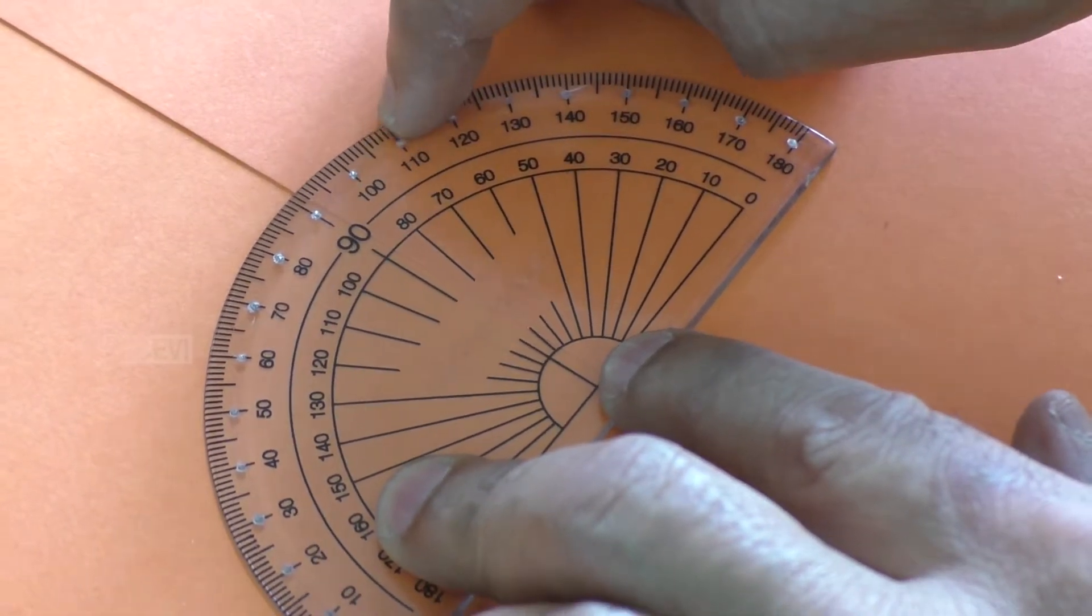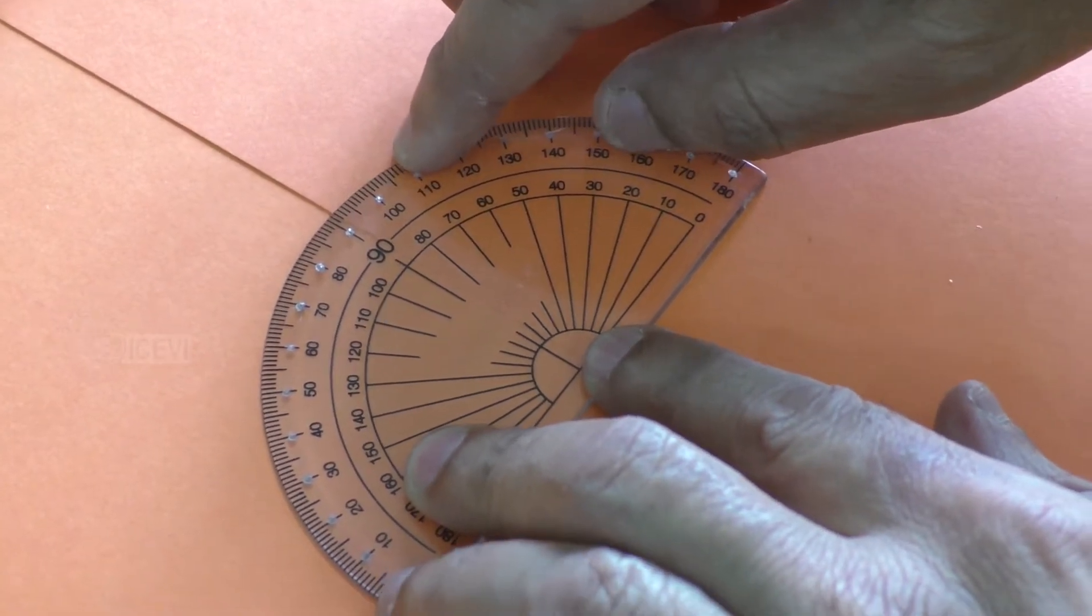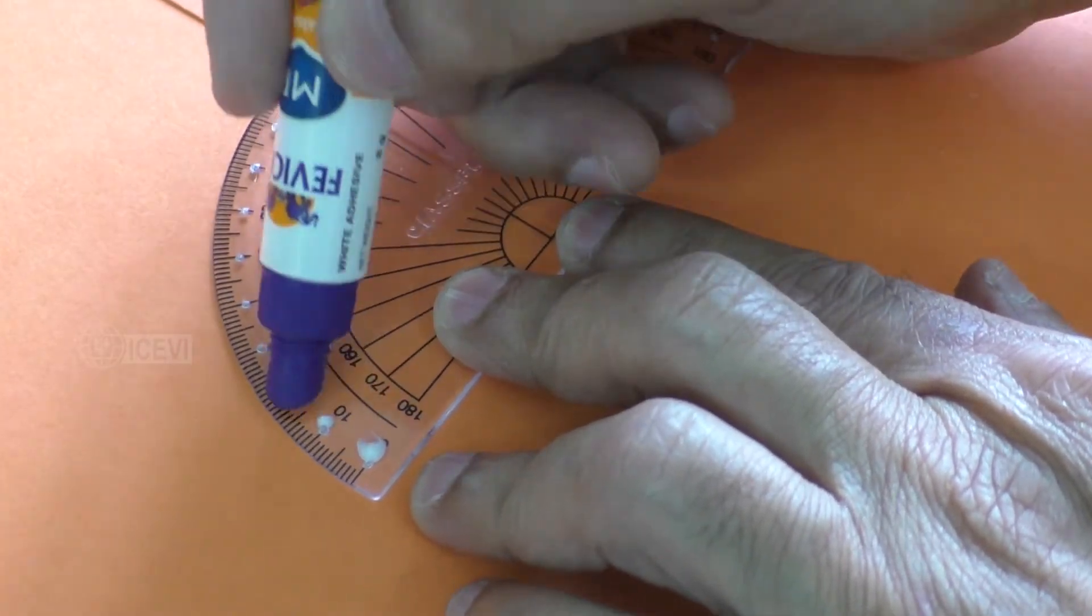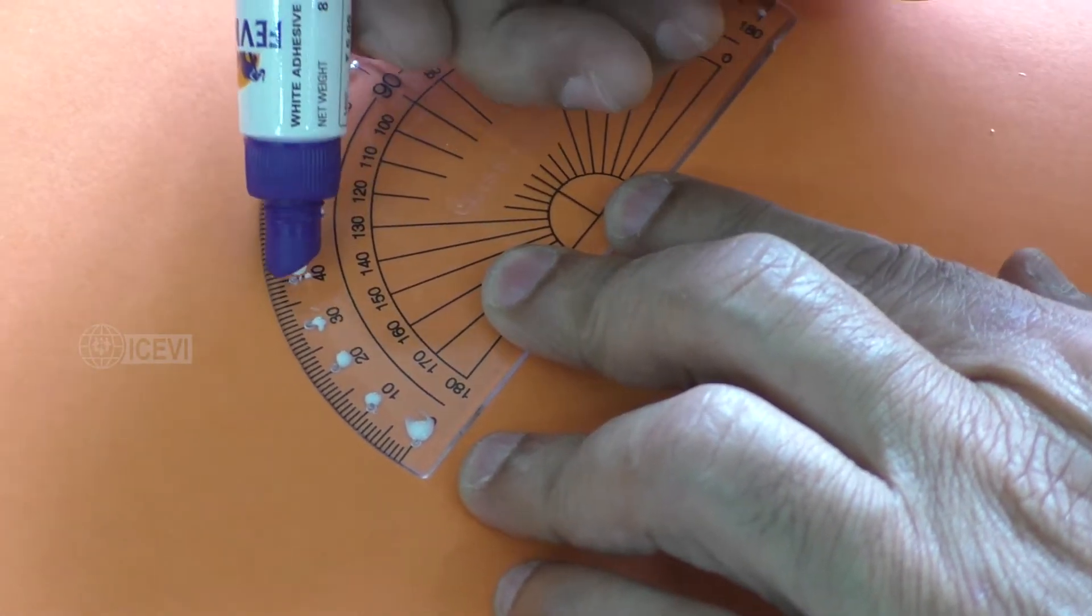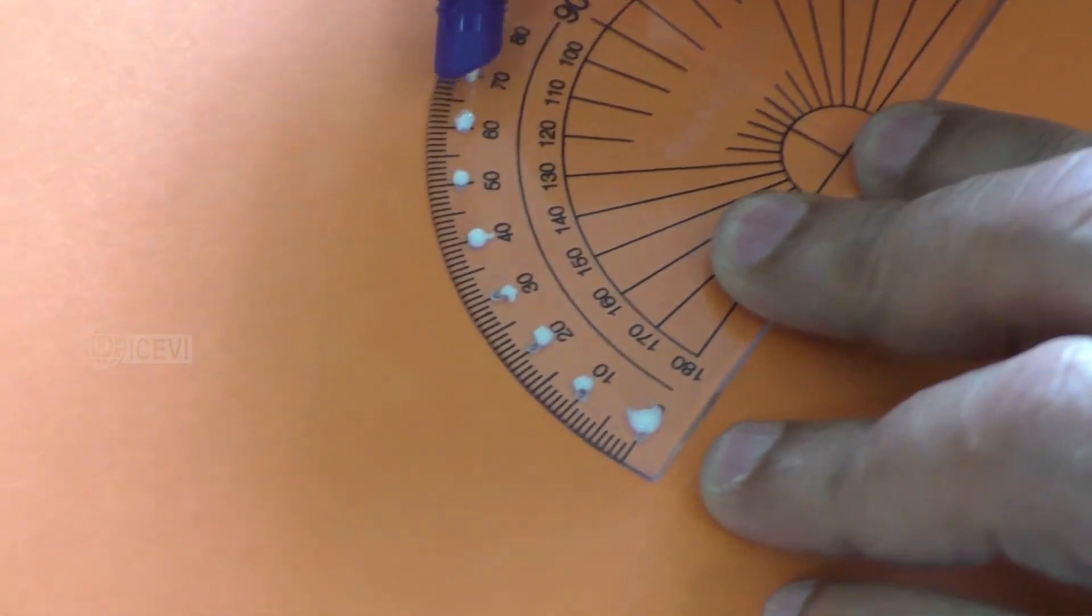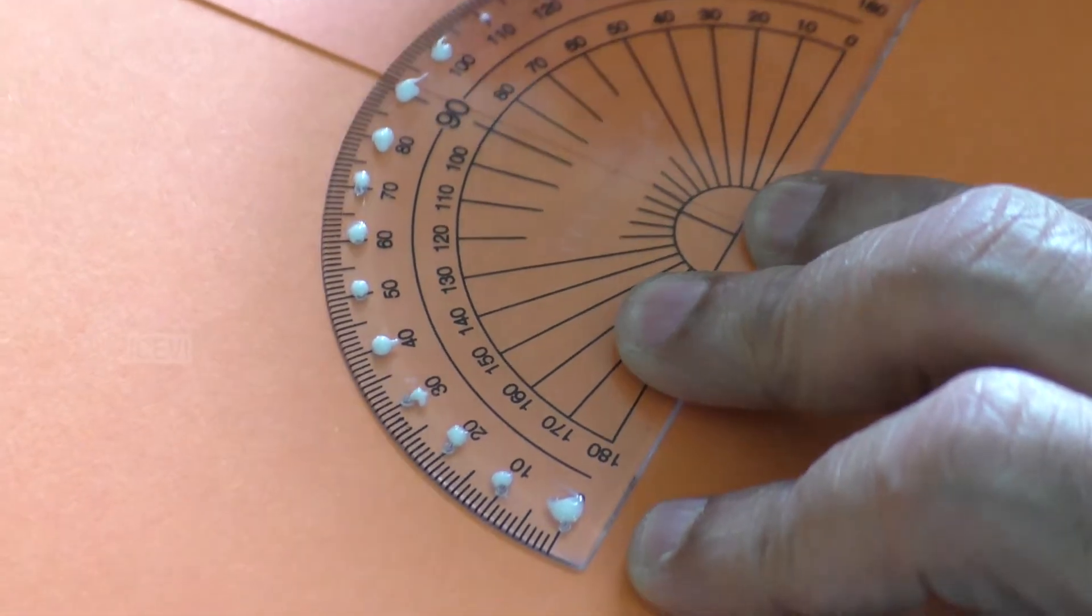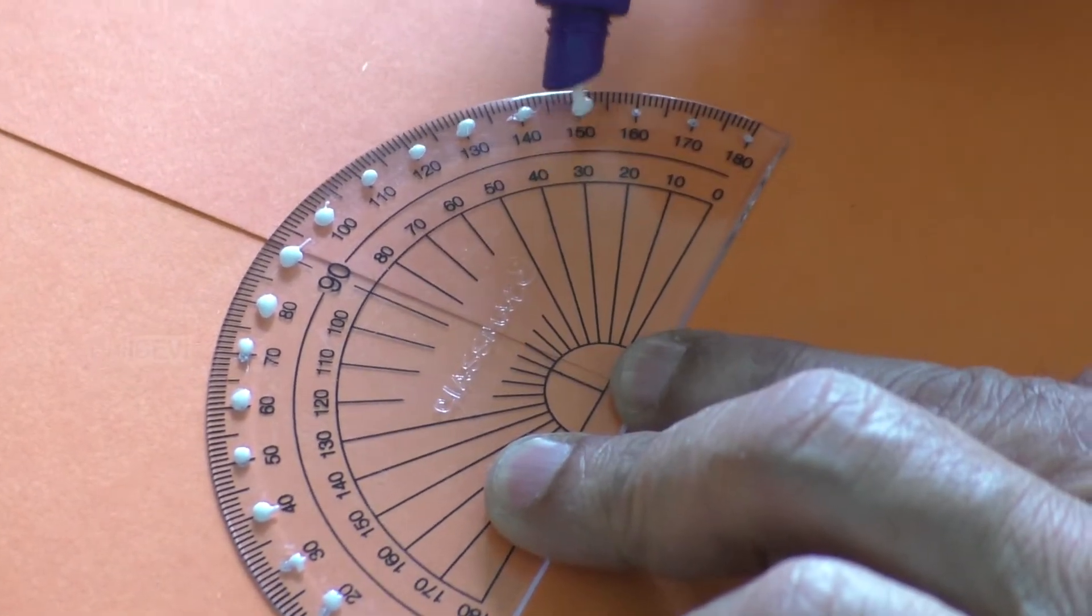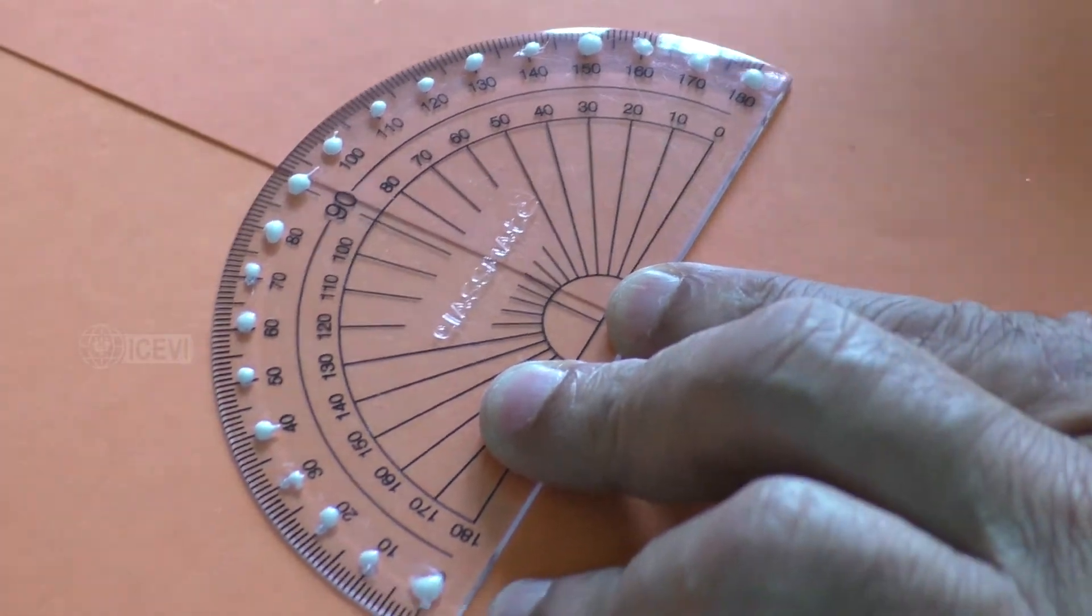Again, if you just want to make small dots on the angles, then after some time this will become dry and it will be smooth. The child will be able to handle it with ease.